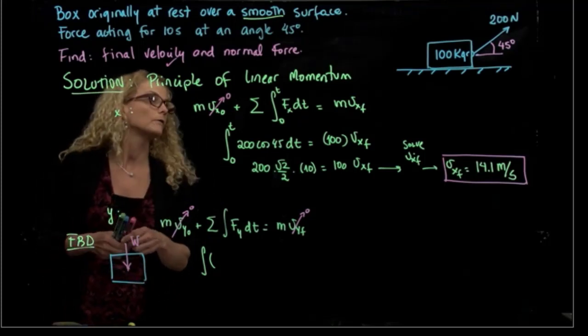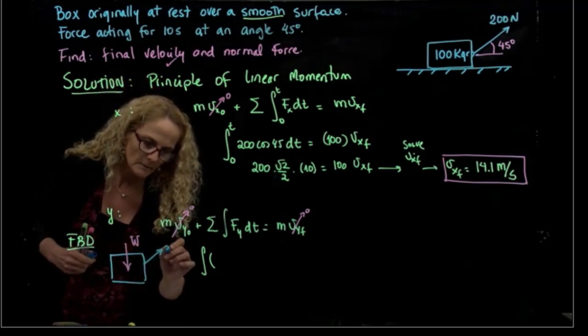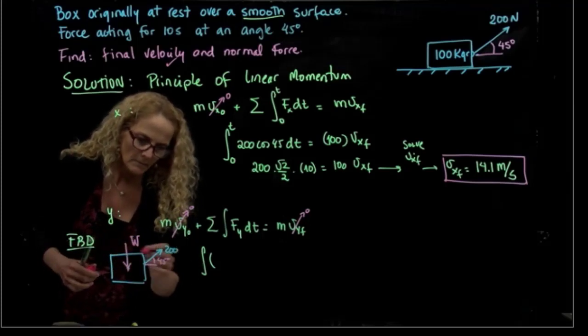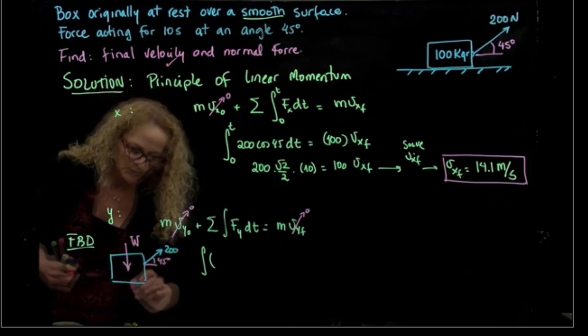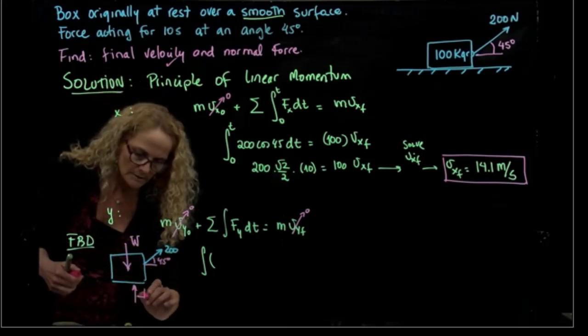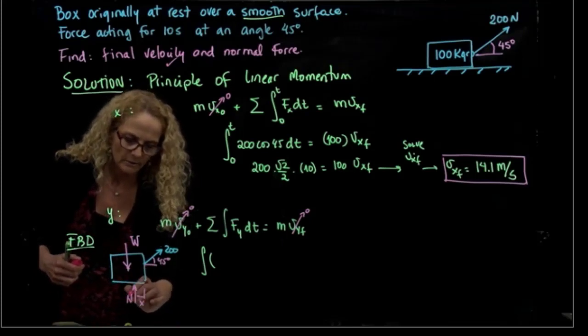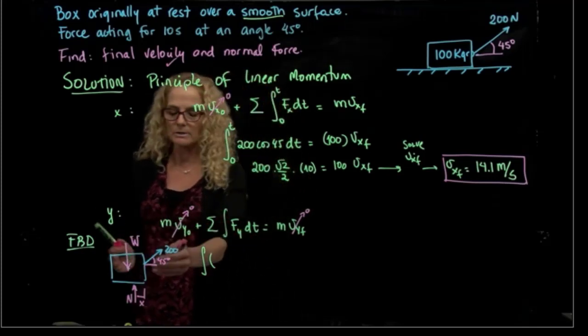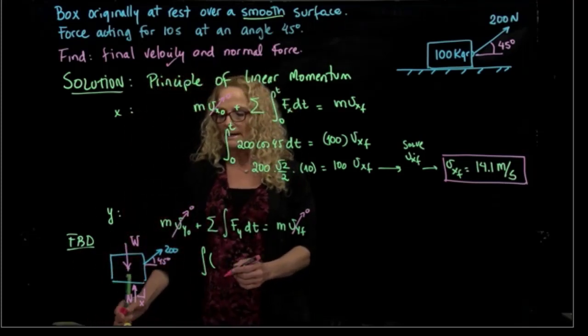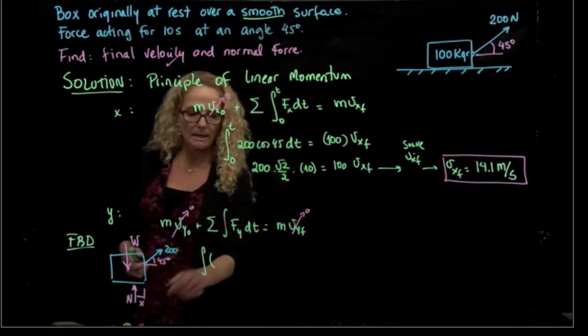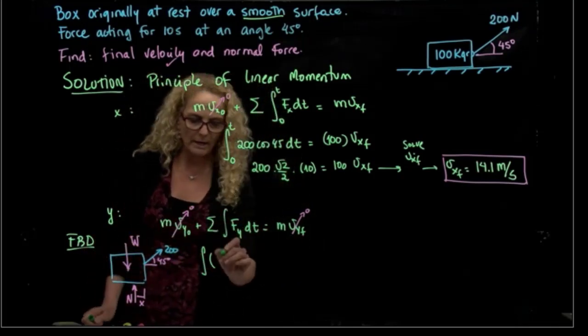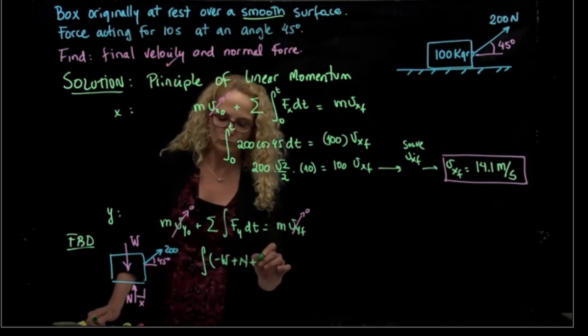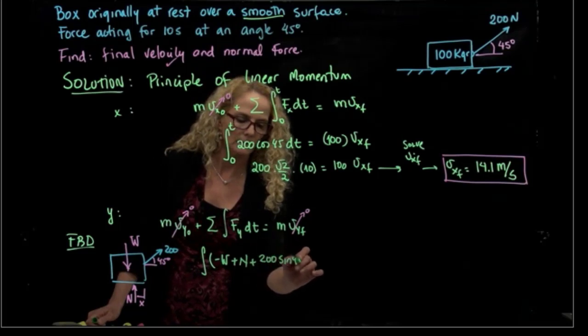I have that force that is applied at 45 degrees. And I have the normal force. Remember that the normal force not necessarily is at the center of the box, because I have another force applied that also moves that normal force. So here I see that the forces in y will be equals to negative weight, plus normal, plus 200 sine of 45.